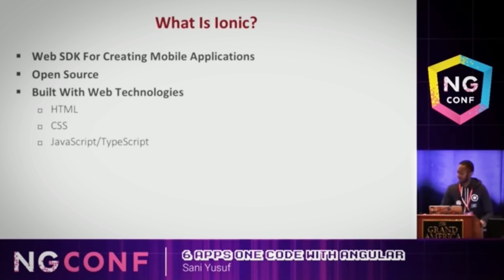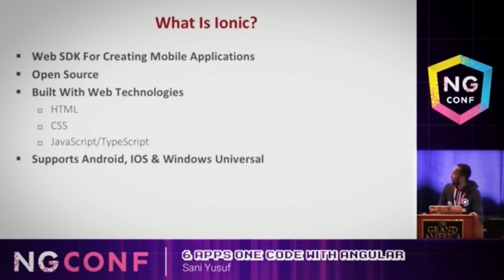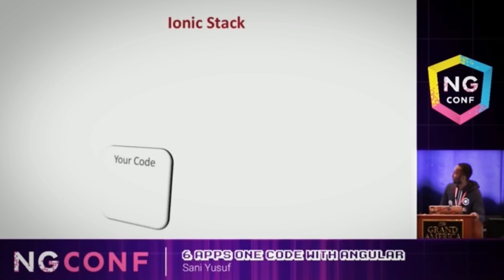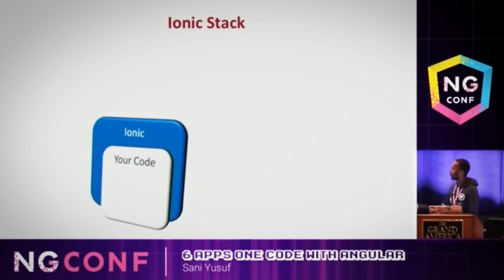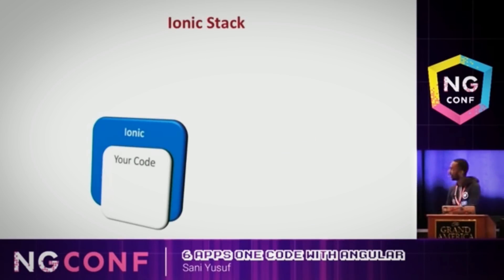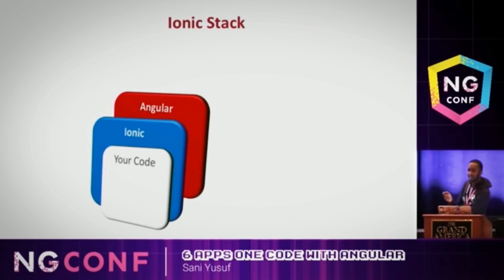Ionic is a web SDK for creating mobile applications. It's open source, built with HTML, CSS, and JavaScript. It supports Android, iOS, and Windows Universal as first-class platforms — and the key word is Windows Universal, because Microsoft wants one experience everywhere. When you create your app, you write your code with HTML, CSS, and JavaScript, then use the Ionic SDK.